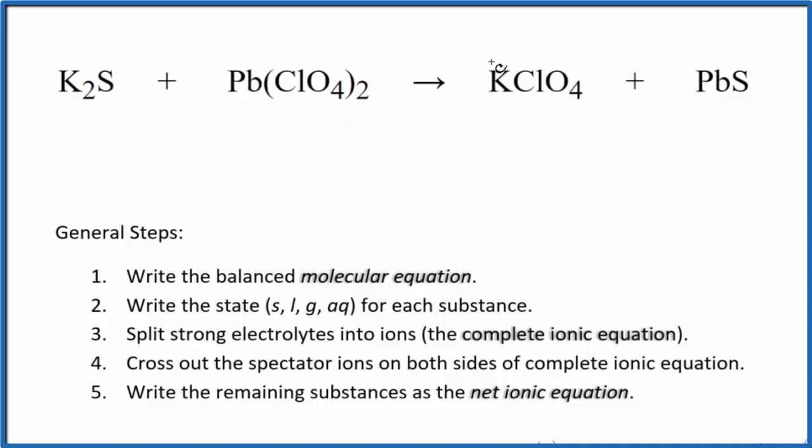I can see that over here I have one potassium and two potassium atoms on this K2S. I think I'll put a two here. That'll balance the potassium. That also gives me two perchlorate ions. I have two perchlorate ions here, a lead and a lead, sulfur, sulfur. So we're good. This is the balanced molecular equation.